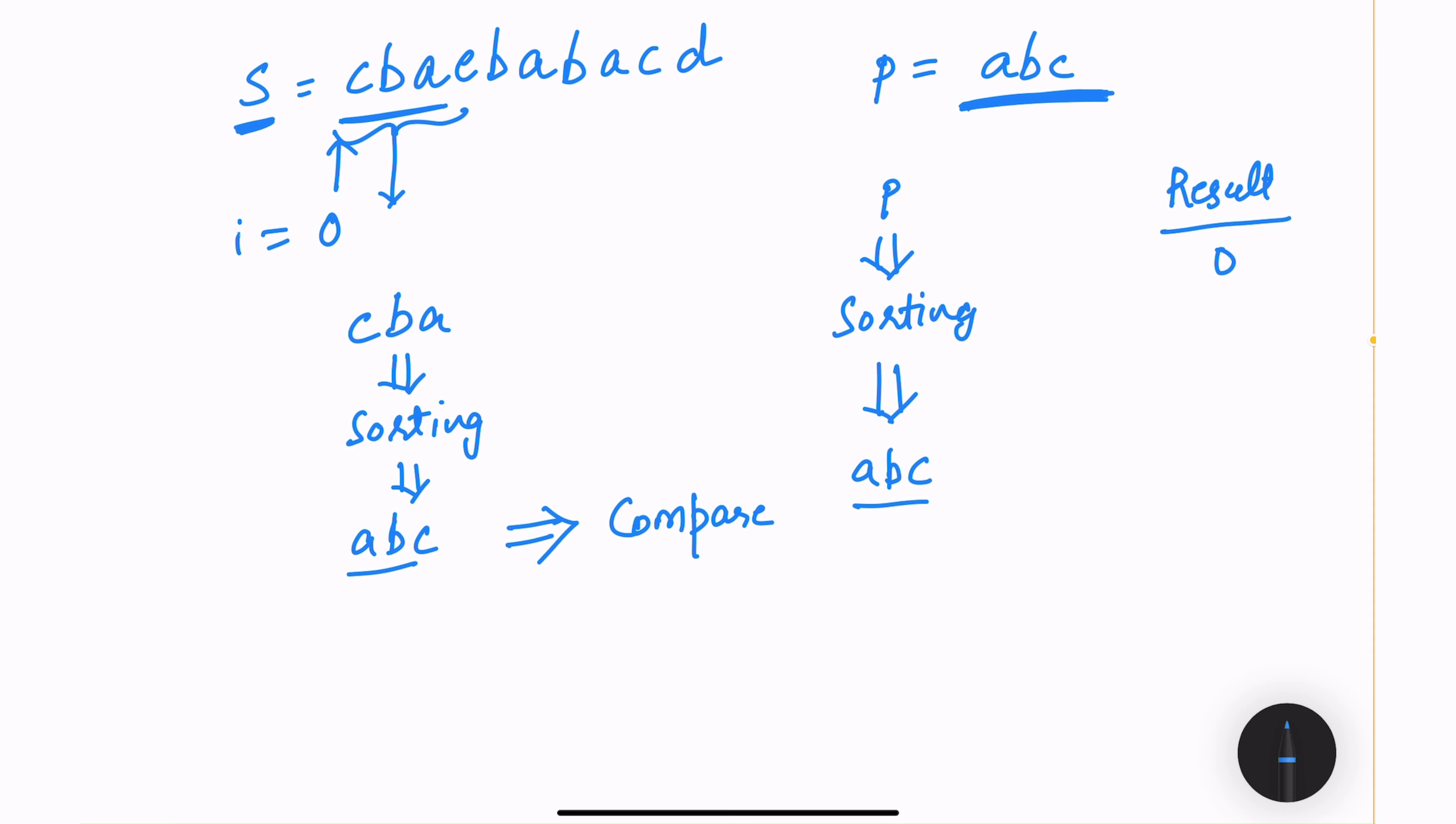And once this comparison is done, I will then increment my i pointer to 1. So my new string will be b, a, e. Do the same operation. After sorting, I will get a, b and e. Again continue the comparison, check it with p.